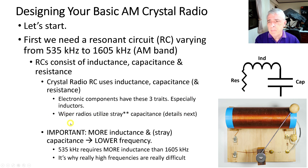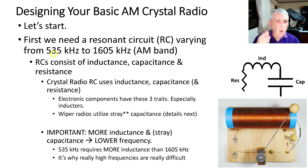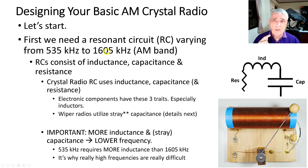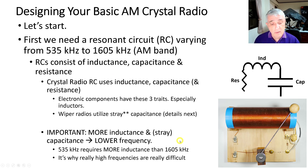Here's an important note: the more inductance and the more capacitance you have, the lower the frequency. So when you want to get down to 535 kHz it requires more capacitance and more inductance, and when you want to go to higher frequencies you have to reduce those. That is why high frequencies are difficult — you have all this unintended capacitance and inductance just in the wiring of a radio, and that's why it took scientists and experimenters a long time to reach higher frequencies.